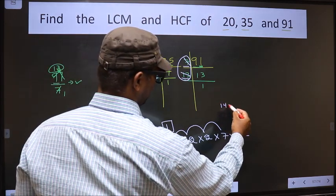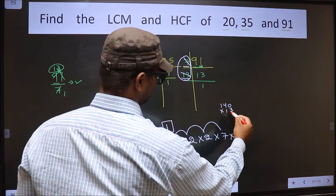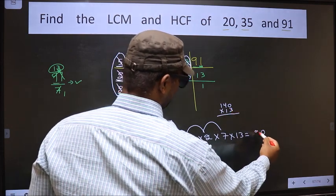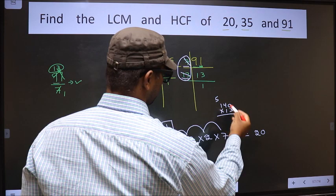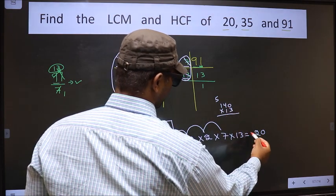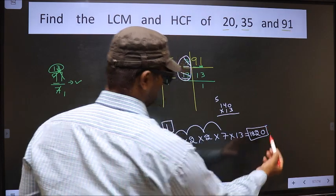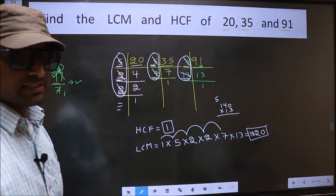So 140 into 13: 13 times 0 is 0, 13 times 4 is 52, so 2, then 5. 13 times 1 is 13, 13 plus 5 is 18, so 1, 8, 2, 0 is our LCM.